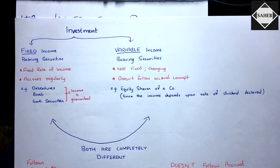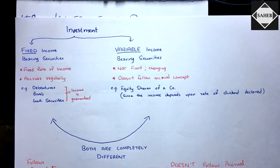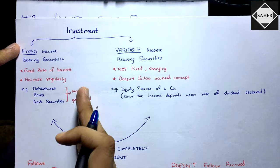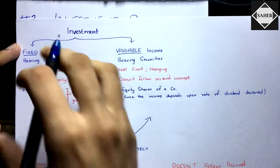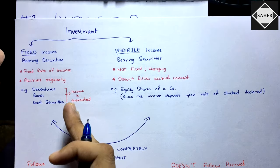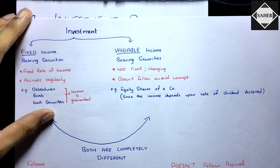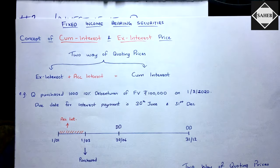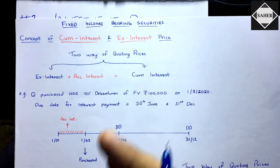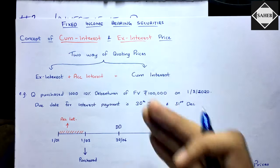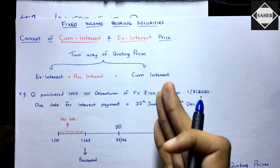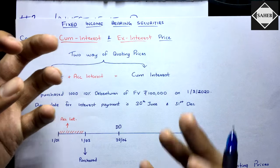We have categorized this chapter into two parts: fixed income-bearing securities and variable income-bearing securities. This is how the questions will come in the exam — you can also get a mix of both. First, we will focus only on fixed income-bearing securities, solve those problems, and then move on to variable income-bearing securities.